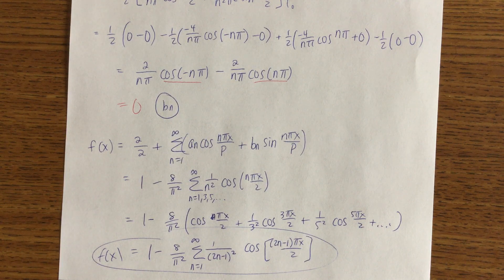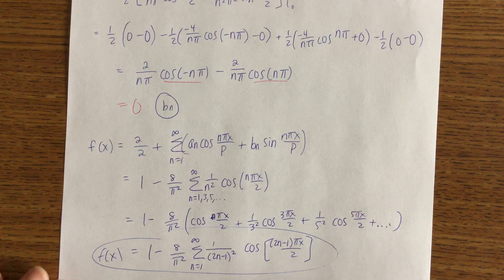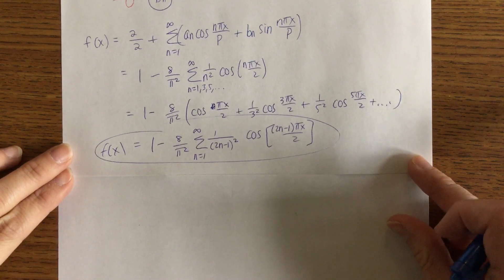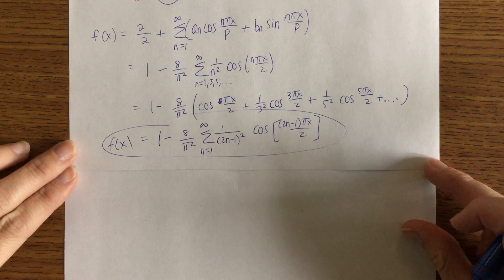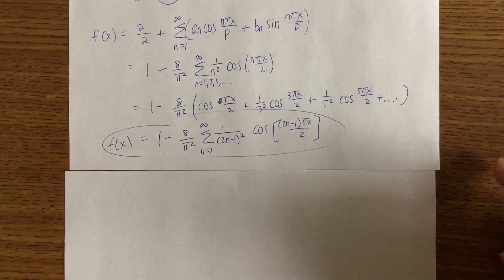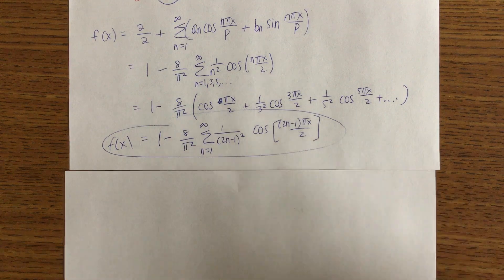This doesn't happen all that often, where you get odd indices 1, 3, 5 — but now at least you've seen it so it won't surprise you later. Any questions before we move on? Now you can see why your homework tonight doesn't have that many problems, because each problem takes a while. The homework will ask you to find the Fourier series of f, which is this full expansion.